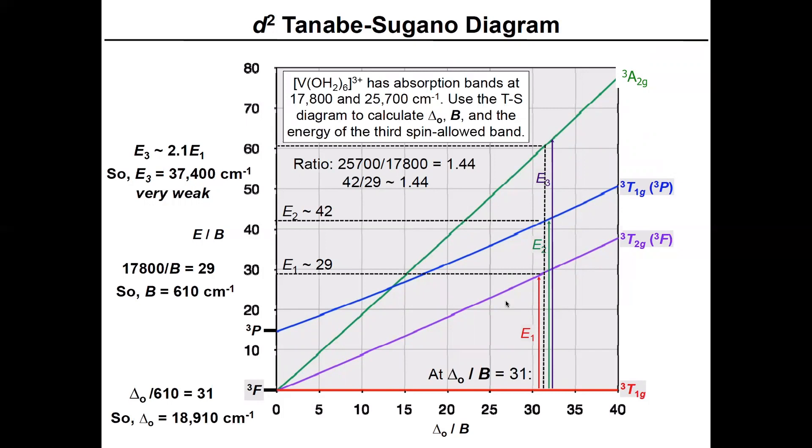The way that this is done is we know that the absorptions occur at 17,800 wave numbers and 25,700 wave numbers. So what we're going to be able to do is we're going to use the D² Tanabe-Sugano diagram to calculate what the actual ligand field splitting is going to be as well as the Racah parameter B for this complex.